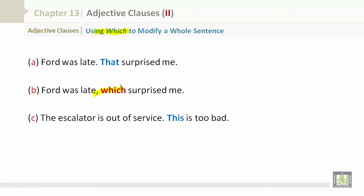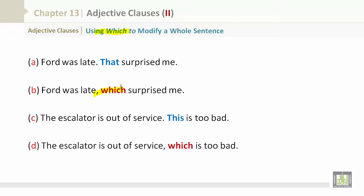The escalator is out of service. Full stop. This is too bad. Now let's use 'which' to modify this whole sentence. The escalator is out of service, comma, which is too bad.